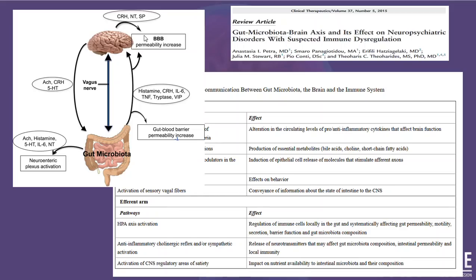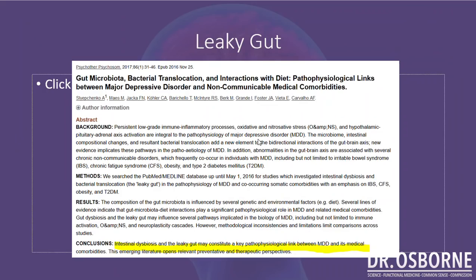Once you have leaky brain, that can start affecting the way you think, the way you feel, the way you act. These inflammatory chemicals now have access to damage your brain directly. As I showed in the last episode, there are a number of research studies that link gluten exposure to neurological disease — diseases like schizophrenia, ADD, depression, and bipolar disorders. It's important to understand this mechanism because if you remove the gluten, you can help seal the gut barrier, and if you seal the gut barrier, you're actually helping seal the blood-brain barrier back up.